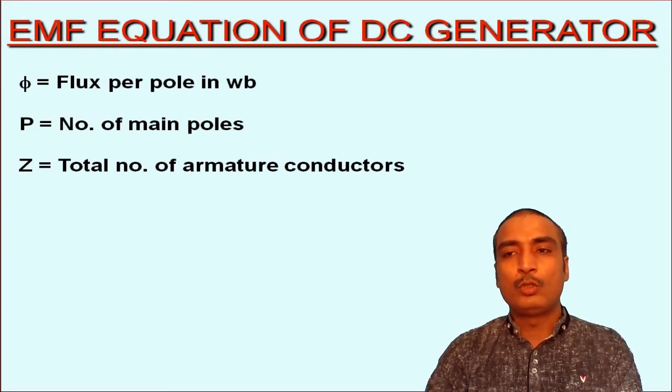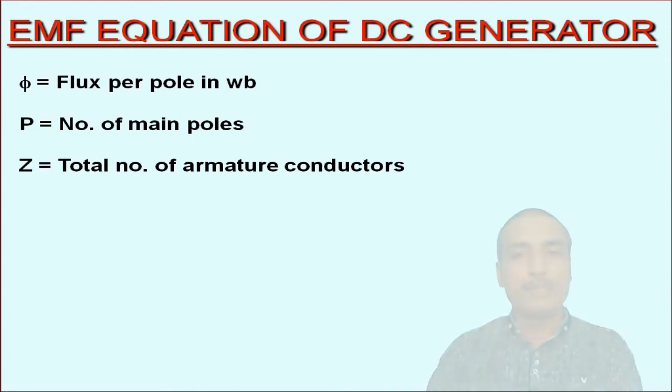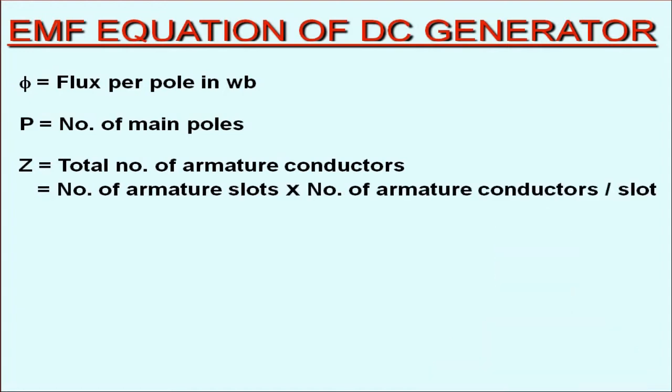therefore, the total number of armature conductors can be calculated by multiplying the total number of armature slots with the number of armature conductors per slot.